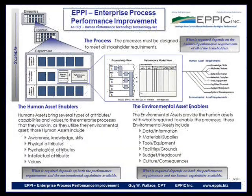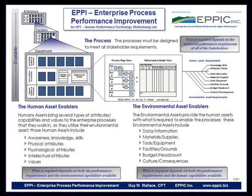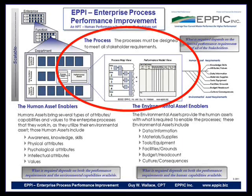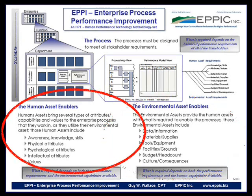In this big picture of EPI — Enterprise Process Performance Improvement — we look at these three variables: the process, the human asset enablers, and the environmental asset enablers. The process must be designed to meet all stakeholder requirements. The environmental assets must be in place to enable the process. And the human assets must bring those enablers that are necessary to manipulate and exist within the environment to perform in the process.